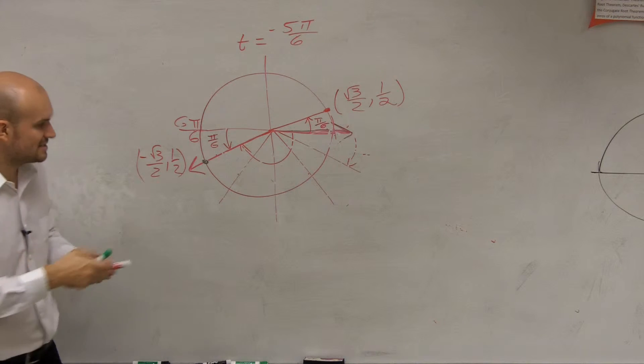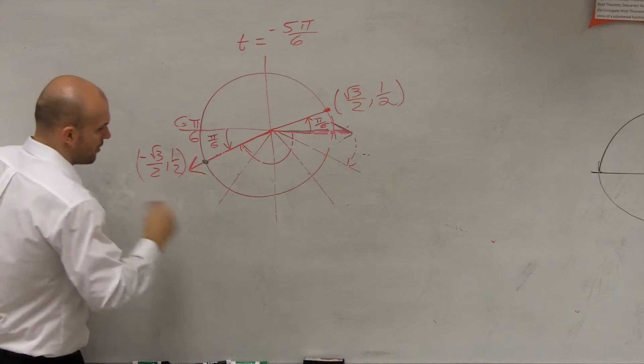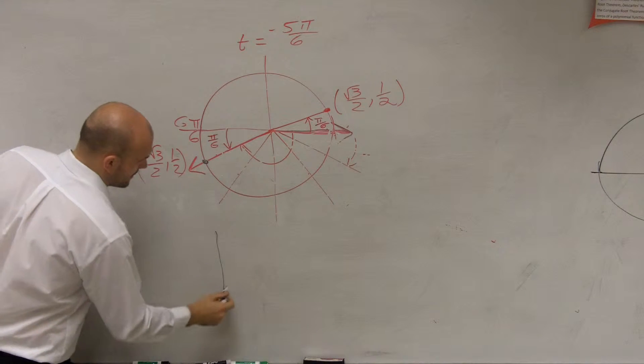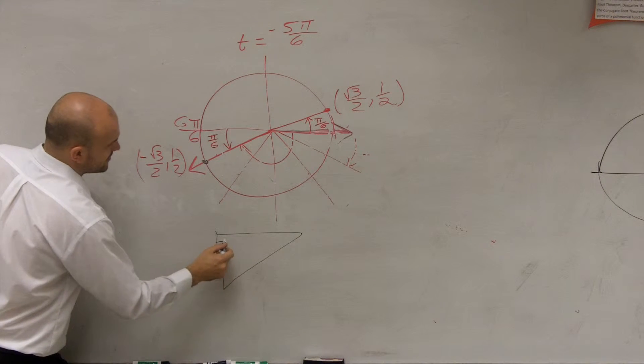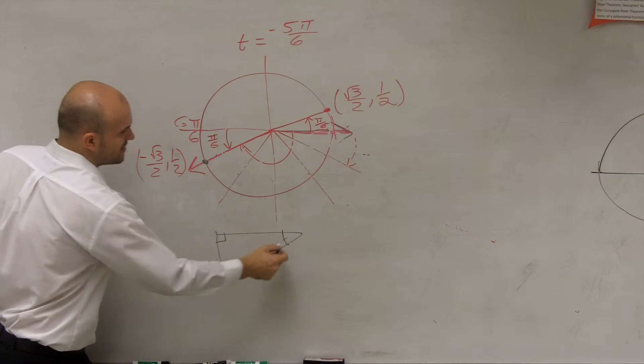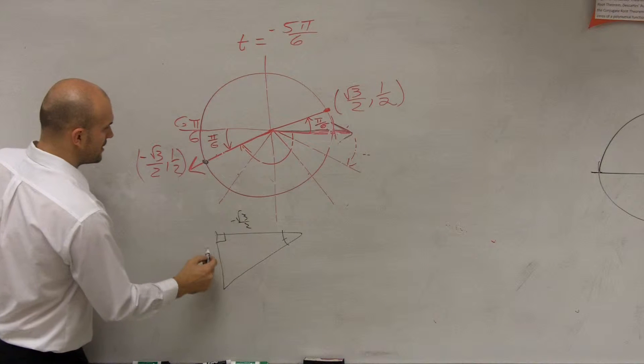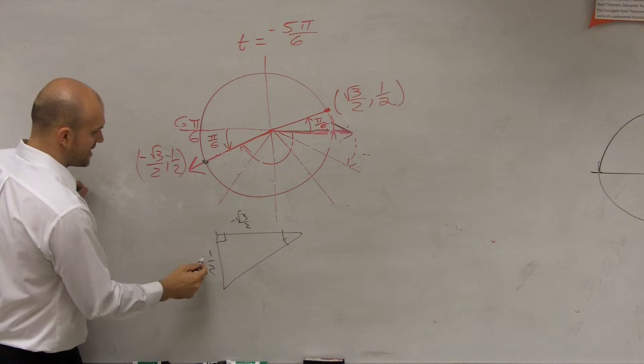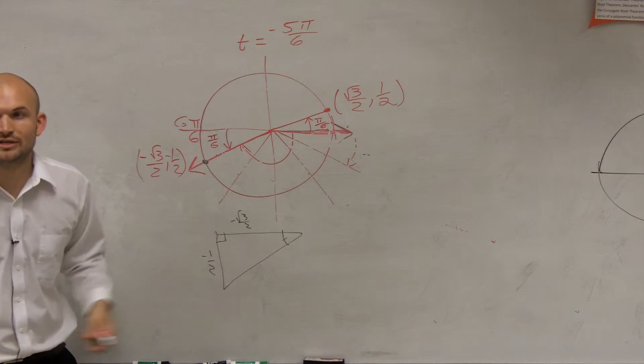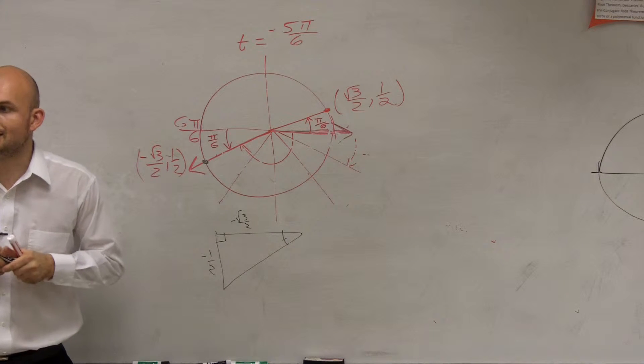Now, everybody in this class wanted to draw the triangle, which is awesome. There's nothing wrong with that. Here's going to be your angle. Here is your x, which is negative square root of 3 over 2 comma negative 1 half. I don't know why I keep on forgetting that. So now you need to do sine, cosine, and tangent.